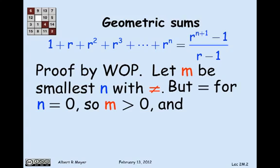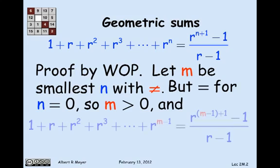So what we know about the least number where this equality fails is that it's positive, and that means, in particular, since it's the least one where it fails, if you go down 1 to m minus 1, the equality holds. So we can assume that the sum of the first m powers of r, starting at 0 and ending at r to the m minus 1, is equal to the formula where you plug in m minus 1 for n, and you get that formula on the right, which I'm not going to read to you.